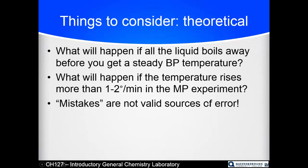Boiling points rise when a sample is impure — for example, adding salt to water raises the boiling point above 100°C, which is why you add salt to pasta water: for flavor, and to make it boil at a higher temperature so pasta cooks faster. Melting points of impure samples go down and get wider — which is why we add salt to roads in winter, so they don't freeze at 0°C but at a lower temperature.